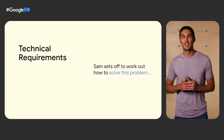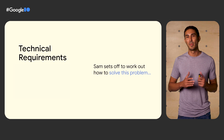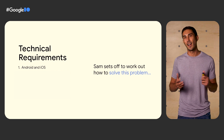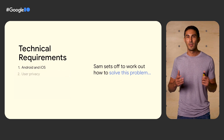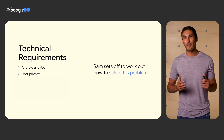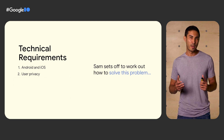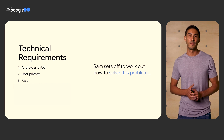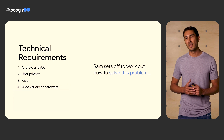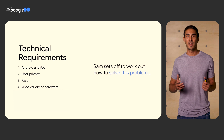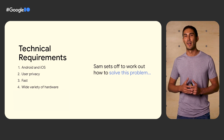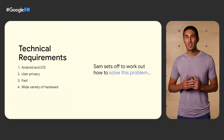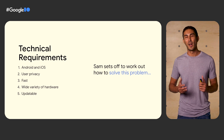Sam has some key requirements for this feature that should help guide the design and implementation. First, both Android and iOS need to be supported. Second, user privacy is paramount — photos should never leave users' devices. Third, processing of photos should happen quickly to ensure a great user experience. Fourth, a wide variety of hardware needs to be supported, from lower-cost, less powerful smartphones all the way to high-end smartphones with the latest chips. And finally, the feature should be easily updateable to add new art styles in the future.